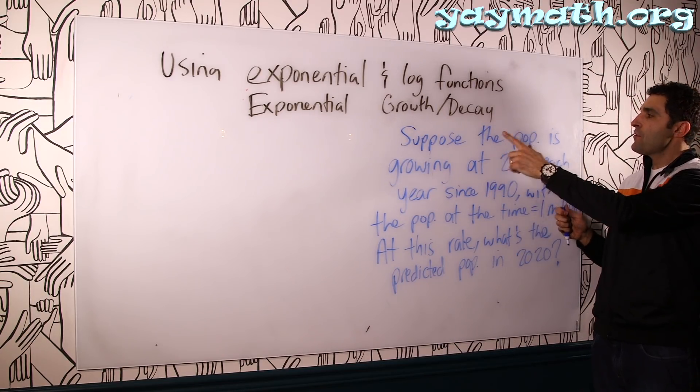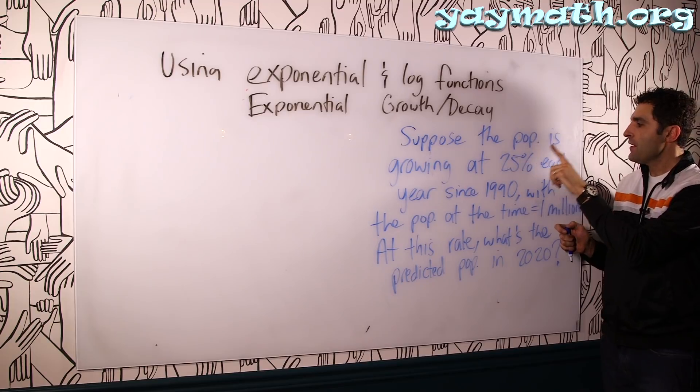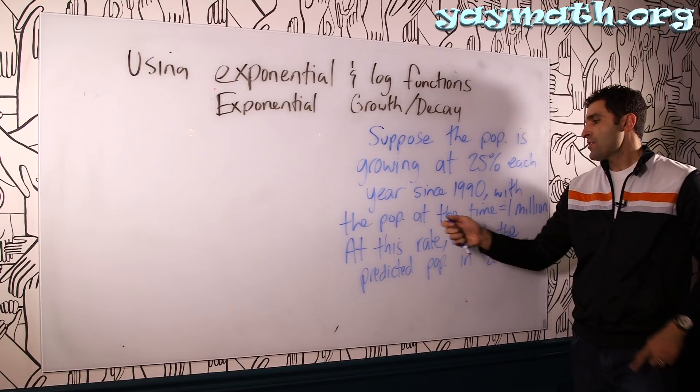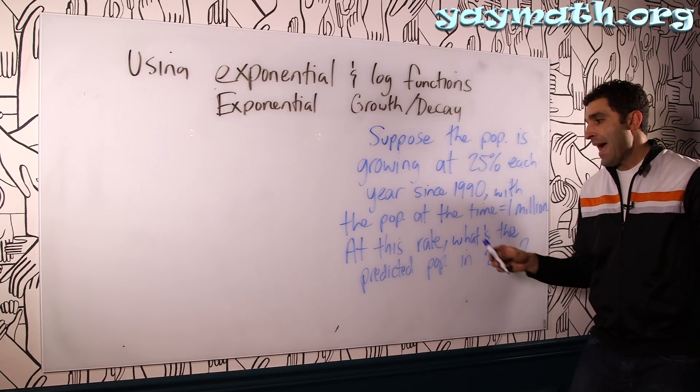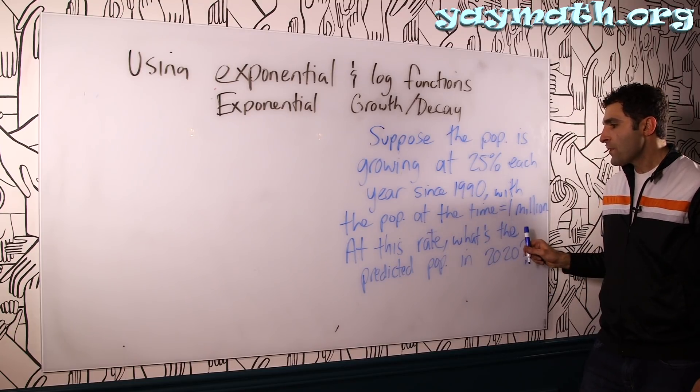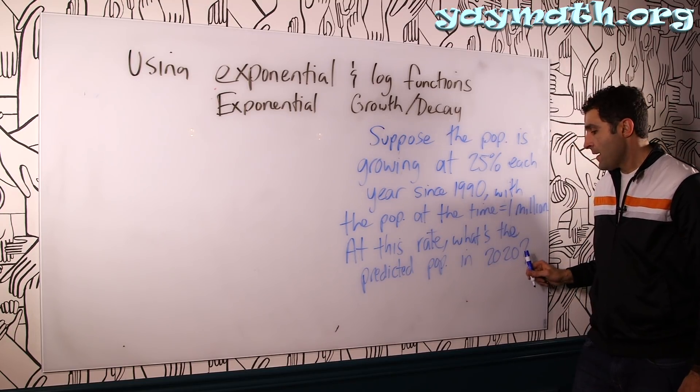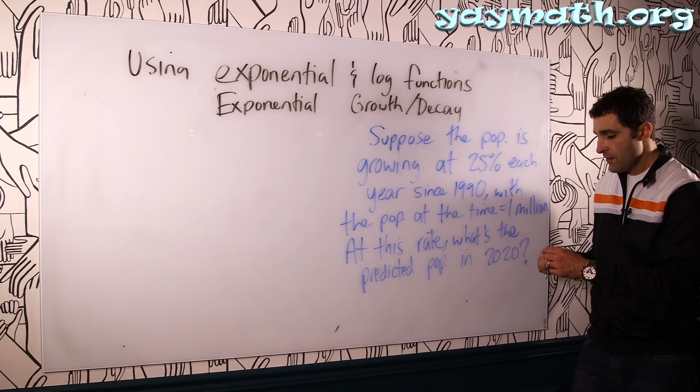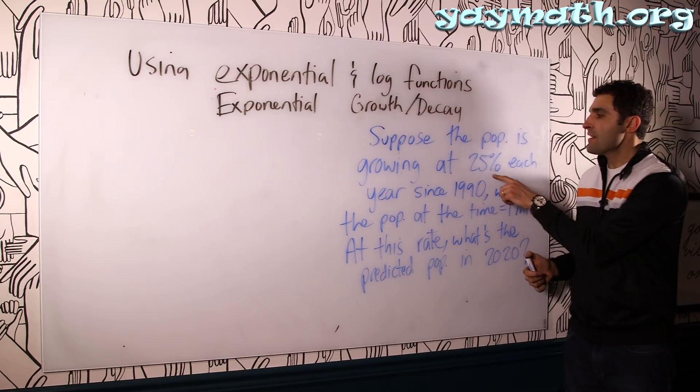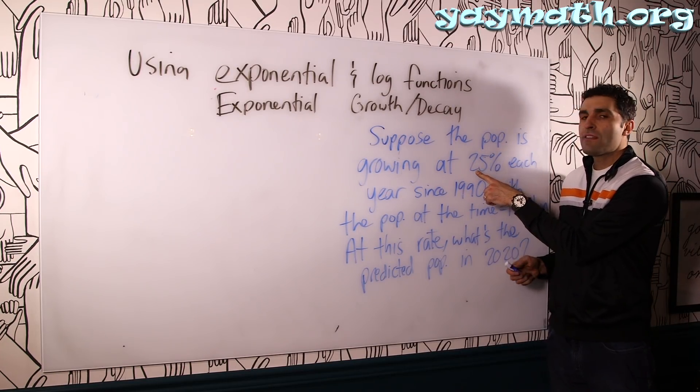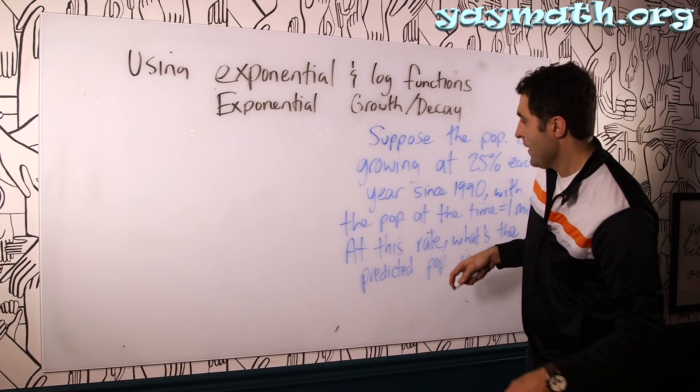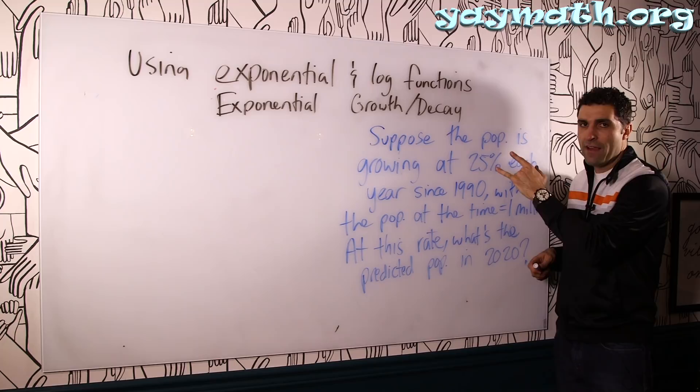Last problem. Let's rock this. Here we have a population problem. Suppose the population is growing at a rate of 25% each year since 1990, with the population at the time equal to 1 million. At this same rate, what would the population predicted to be in 2020? So basically 30 years from there.